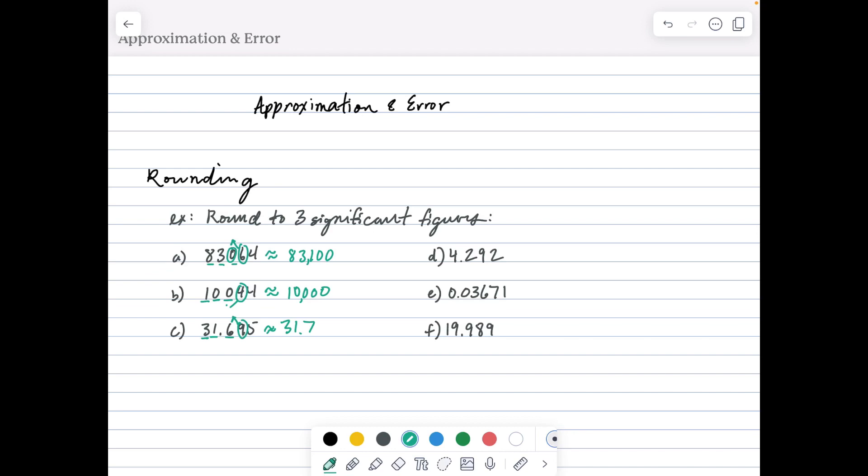For part D, our most valuable digit is the 4. Three significant figures - we decide if we keep the 9 or round it up. The 2 says keep it where it is, so this is approximately 4.29.